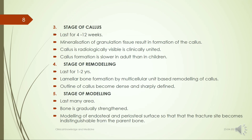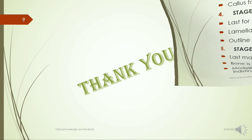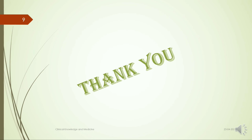Stage 4 is the stage of remodeling, lasting 1 to 2 years. Lamellar bone formation occurs by a multicellular unit, with remodeling of the callus so the outline becomes dense and sharply defined. Stage 5 is the stage of modeling, which lasts many years. The bone is gradually strengthened by modeling of the endosteal and periosteal surfaces, so that the fracture site becomes indistinguishable from the parent bone.